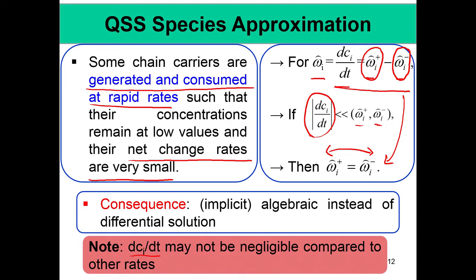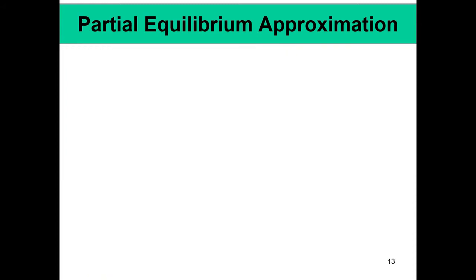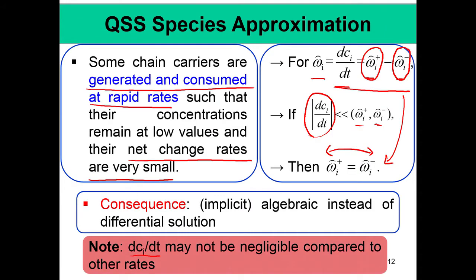This is the QSS approximation. Its most important hallmark is that it is applied on a given species — specifically on the net rate of change of that species' concentration — which is not changing much in comparison to its rate of production and rate of consumption.